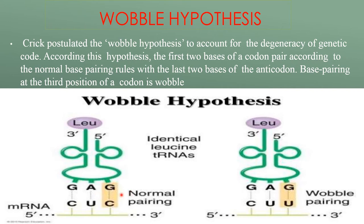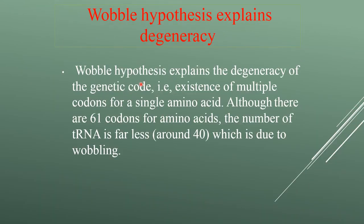According to the wobble hypothesis, the first two bases of the codon pair according to the normal base pairing rules with the last two base pairs of the anticodon. The base pairing at the third position of a codon is called wobble pairing, which accounts for the existence of multiple codons for a single amino acid.